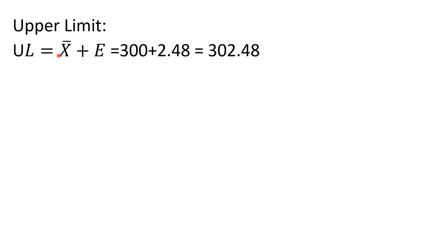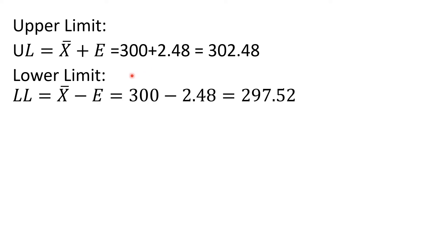Now let us solve for the upper limit using the formula: UL equals sample mean plus the margin of error. The sample mean is 300, plus the margin of error of 2.48, gives an upper limit of 302.48. Next, for the lower limit using the formula: LL equals sample mean minus margin of error. That is 300 minus 2.48, which equals 297.52, and that is the value of the lower limit.